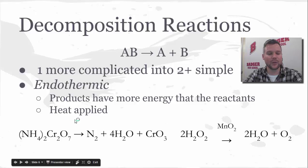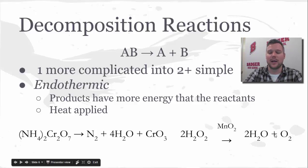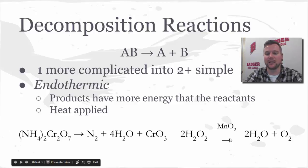Two examples: ammonium dichromate is a pretty complicated-looking formula being broken into several smaller, simpler compounds. Likewise, hydrogen peroxide decomposes into water and oxygen gas. Interestingly, this occurs in the presence of a catalyst — that's why MnO2 is listed above the arrow, because it's not a reactant or product. It just makes the reaction go more quickly and is not used up; it's still in the reaction container when we're done.